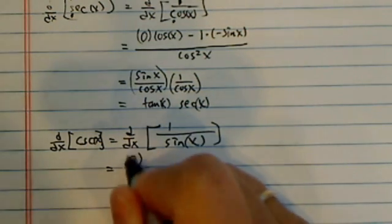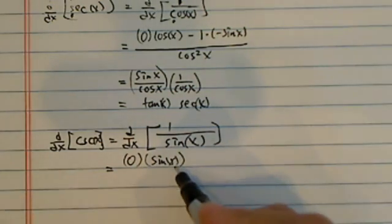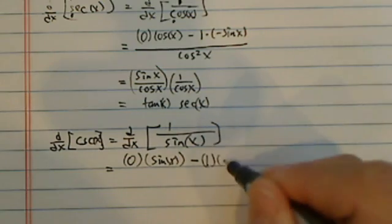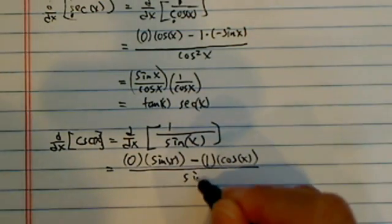Again, take derivative of the first one, which is 0, times the bottom one. We don't really have to write this one, because 0 times this will be 0 anyway. Minus 1 times the derivative of the bottom, which is cosine of x, over sine squared.